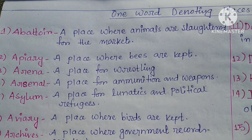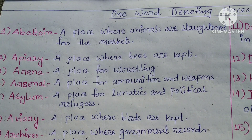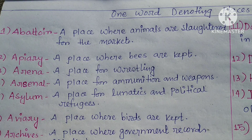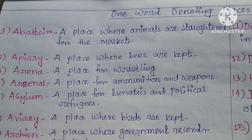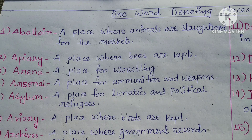Welcome back guys. Today we will discuss one word substitutions denoting places. A place is used for every different kind of working or purpose, so a place which is used to collect honey should not be used as a school. A place which is used for the collection or use of different things is called by different names, and today we will learn those different names.